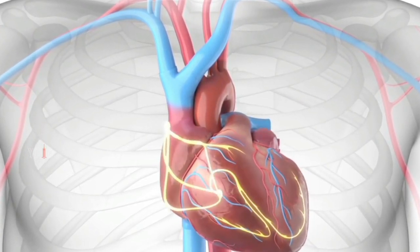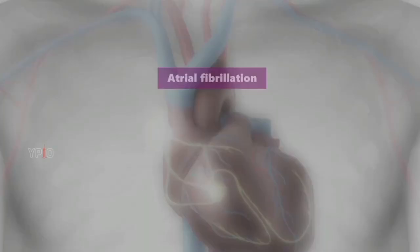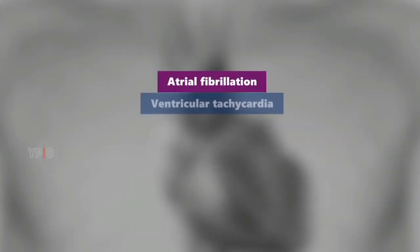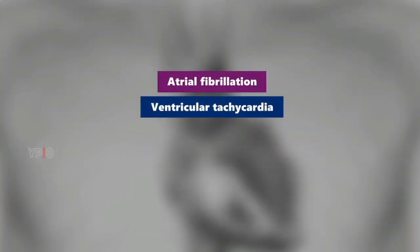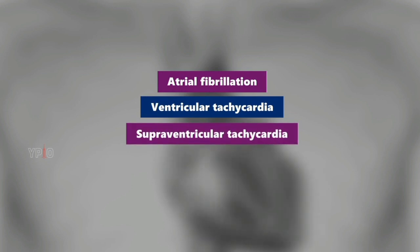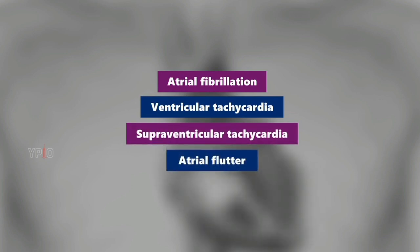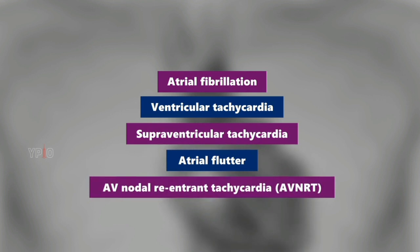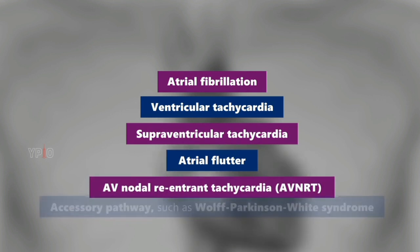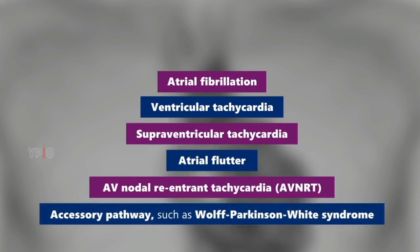Some of the types of heart rhythm problems include atrial fibrillation, ventricular tachycardia, supraventricular tachycardia, atrial flutter, AV nodal re-entrant tachycardia (AVNRT), and accessory pathway conditions such as Wolff-Parkinson-White syndrome.